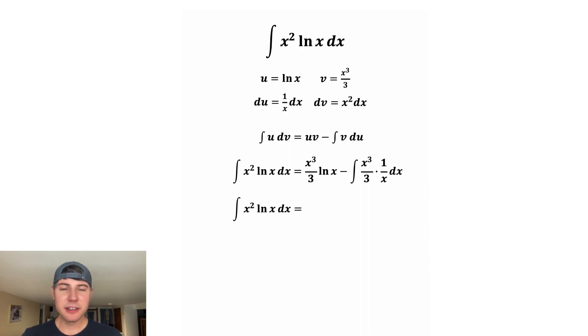And then we can clean things up a little bit. All of this can be put over 3. And then we can subtract the integral where we have x cubed over x, which is x squared. And this 1 third can be brought in front, and we still have the dx.